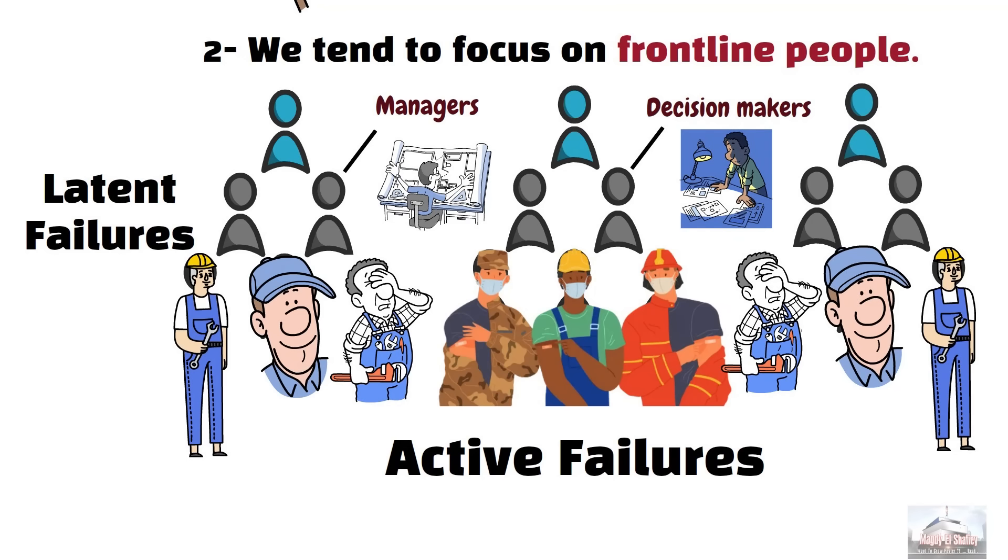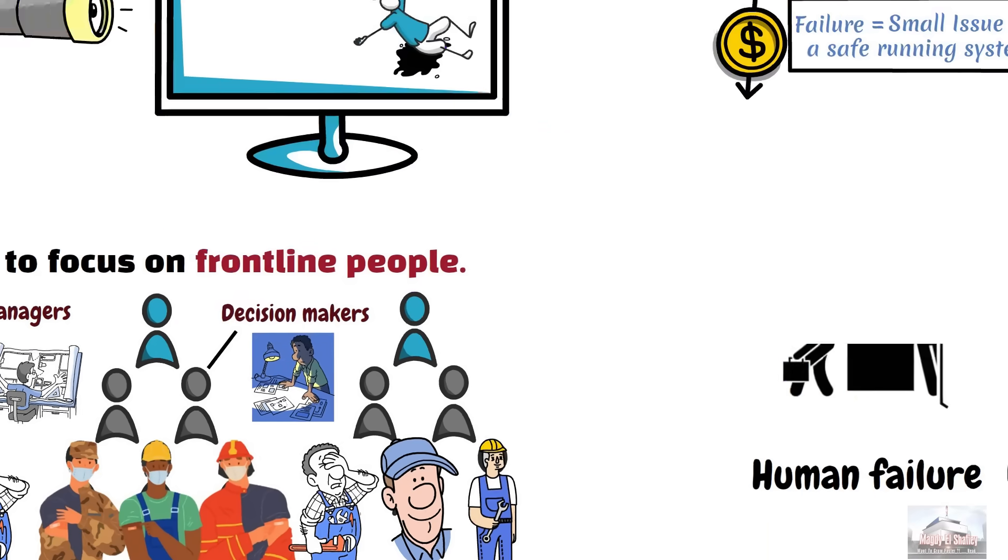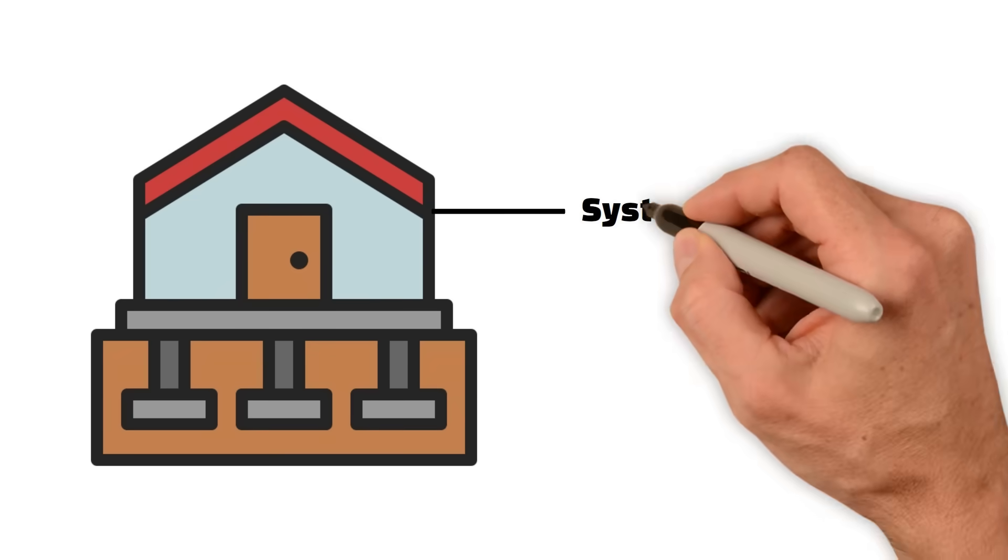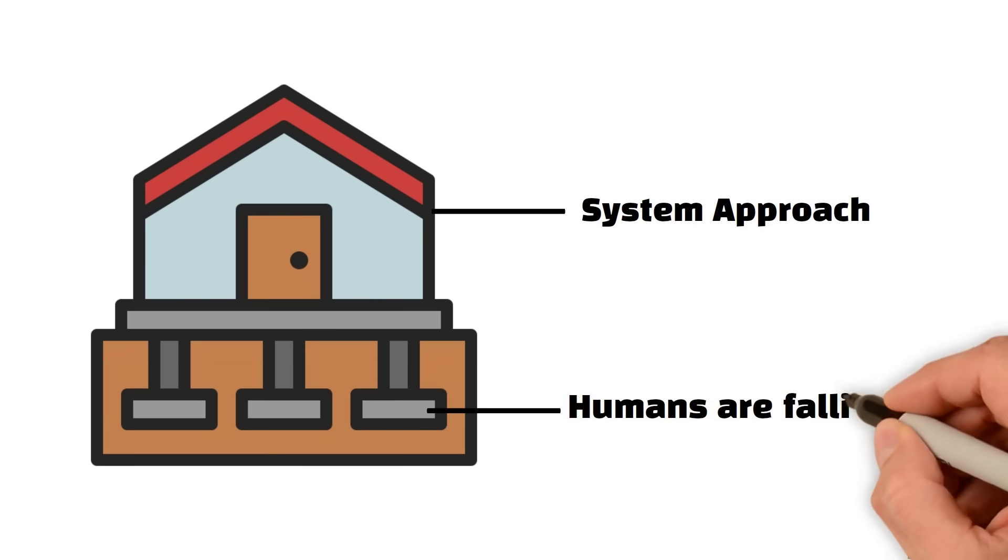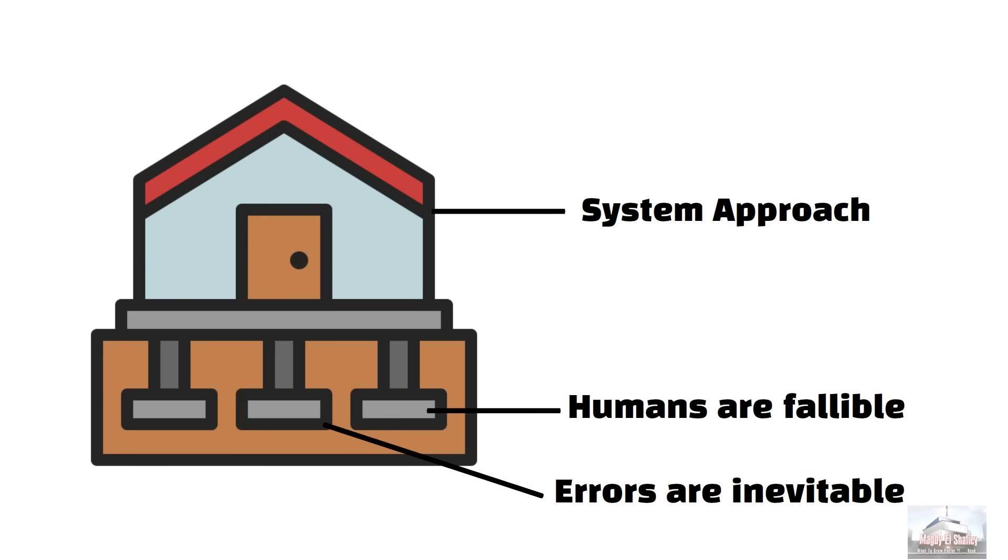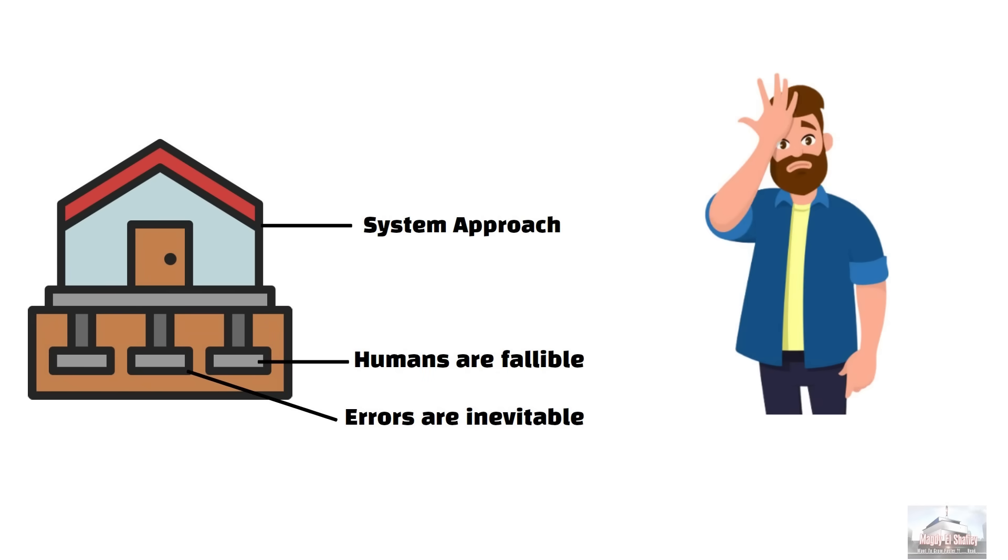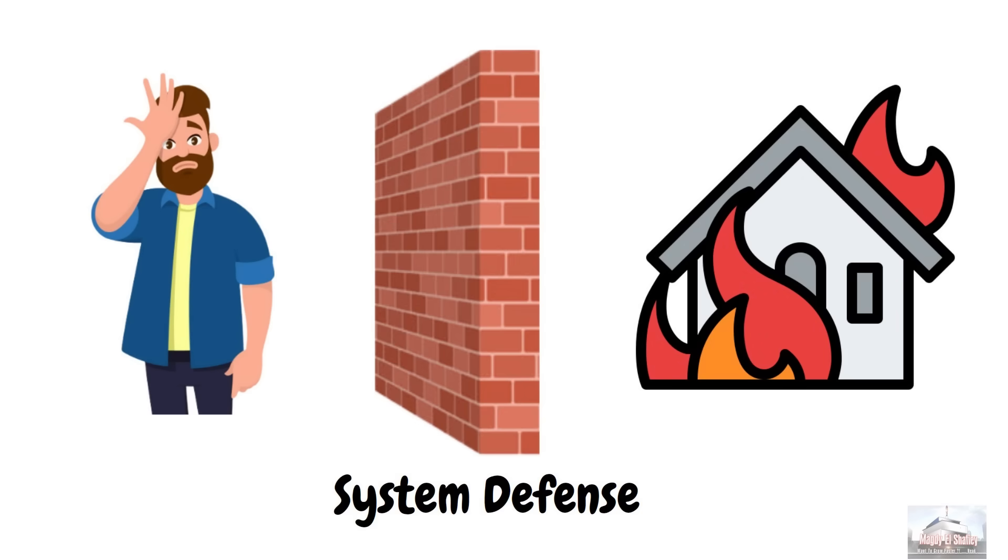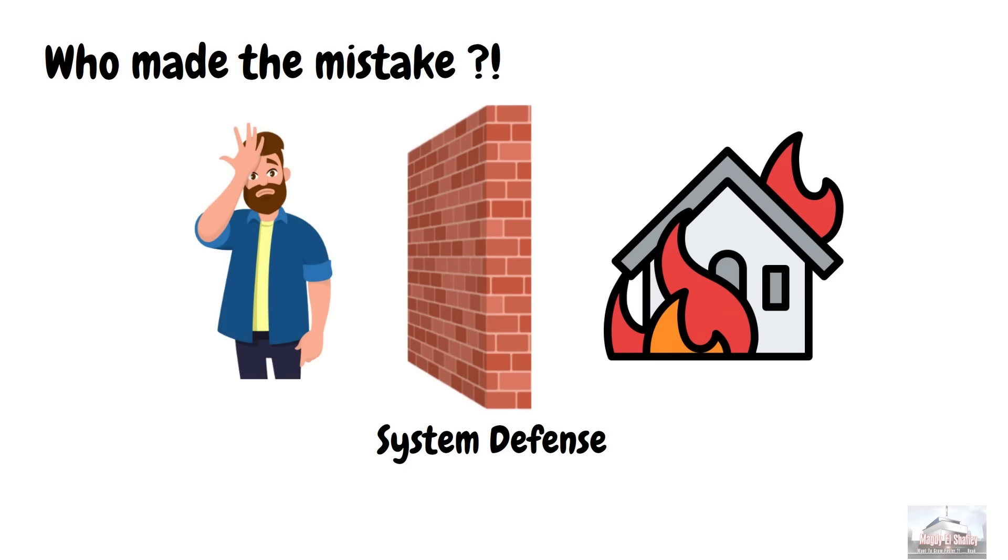These failures are typically hidden within an organization until triggered by an event likely to have serious consequences. Whereas in the system approach, the fundamental principle of the system's approach is the recognition that humans are inherently fallible and errors are inevitable, even in the best organizations. And we cannot change the human condition, but we can change the conditions under which humans work and put in system defenses. And when an adverse event occurs, the important issue is not who made the mistake, but rather how and why did the system's defenses fail.